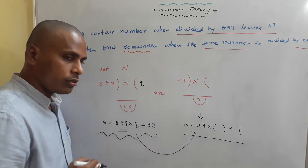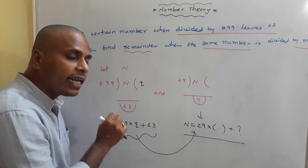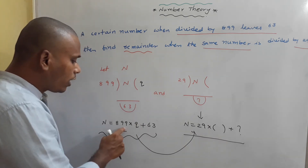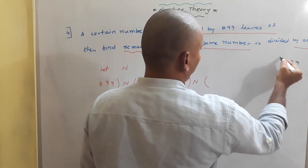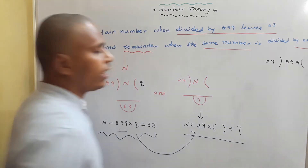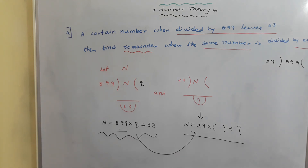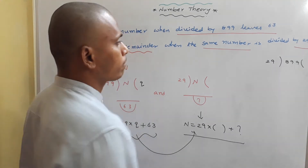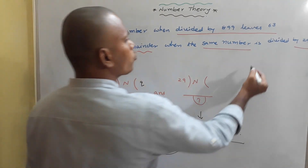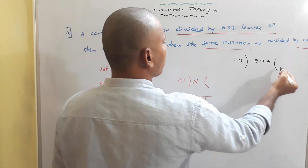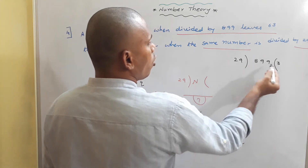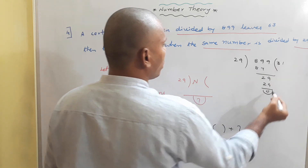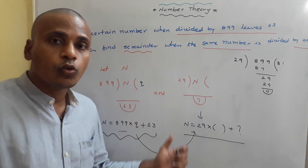We divide 899 by 29 to find: 29 × 31 = 899. So 899 = 29 × 31.